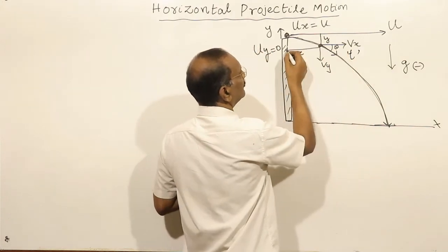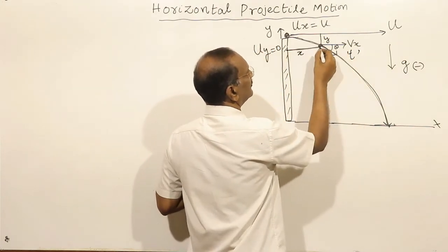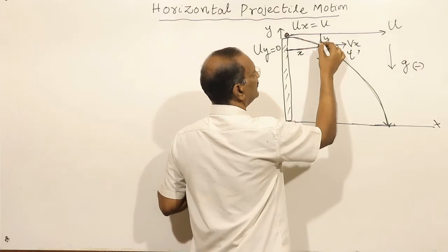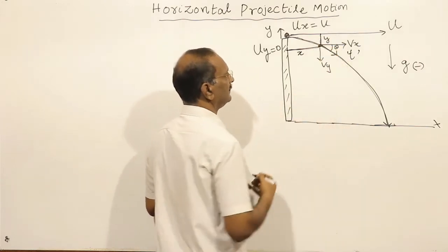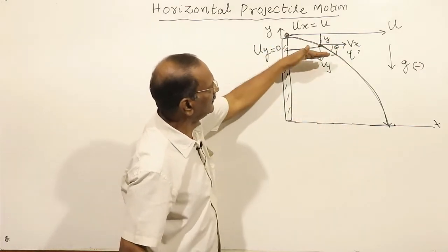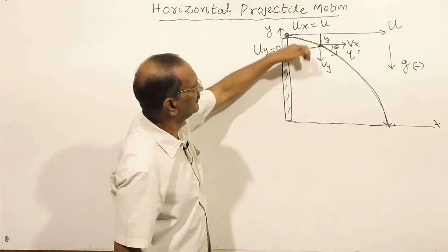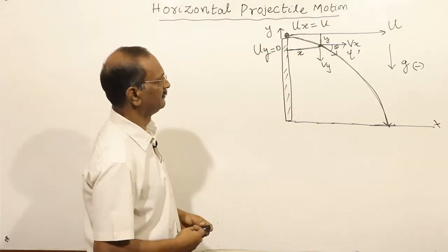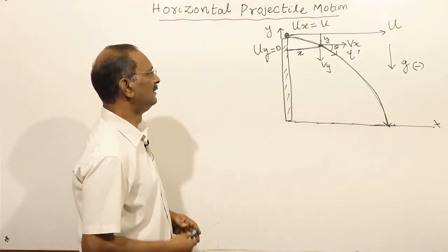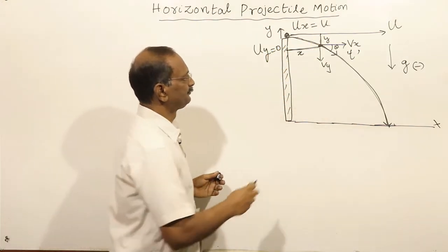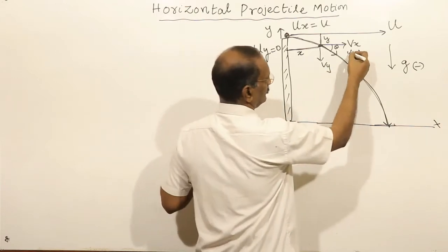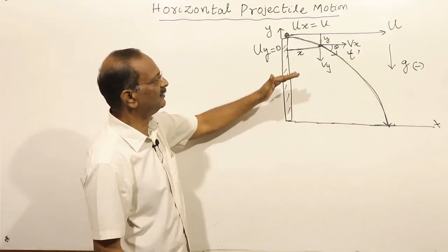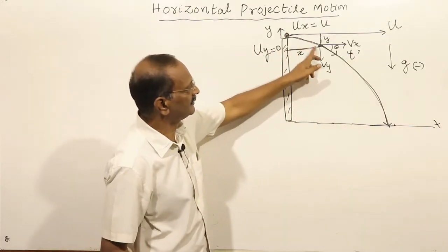There is a two-dimensional motion in projectile: x-direction (horizontal displacement) and y-direction (vertical displacement). So there is a combined two-dimensional motion in the projectile.